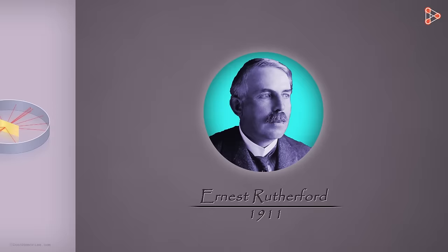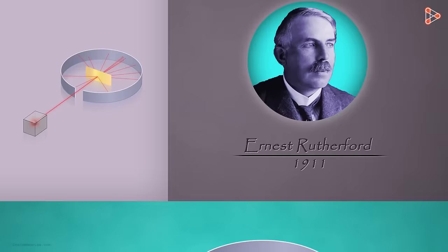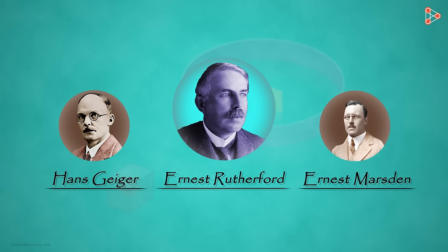Around the year 1911, a British physicist Ernest Rutherford carried out the famous Gold Foil experiment. He did this to understand the structure of an atom. The experiment was carried out by Rutherford along with Hans Geiger and Ernest Marsden.